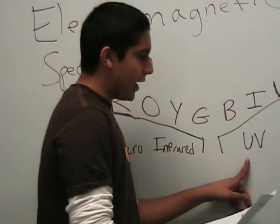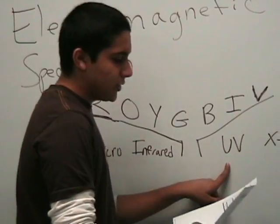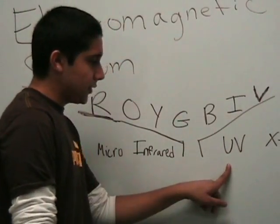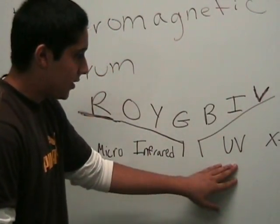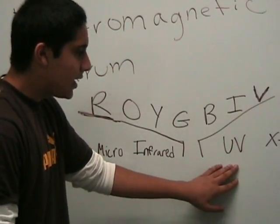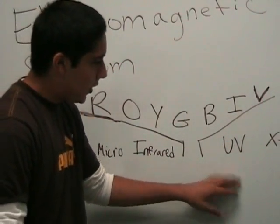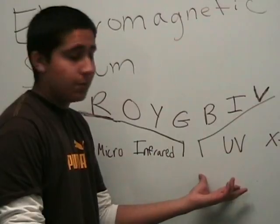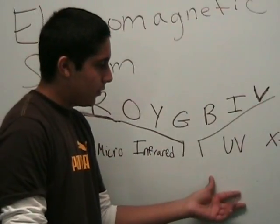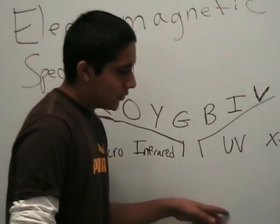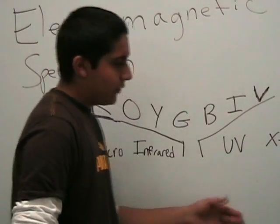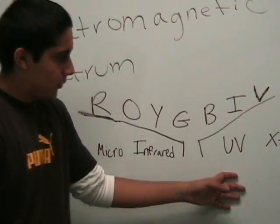Over here we have ultraviolet light, which is sometimes used to kill bacteria in some areas, and it's also used in black light bulbs, so there's ultraviolet light coming out of black light bulbs.